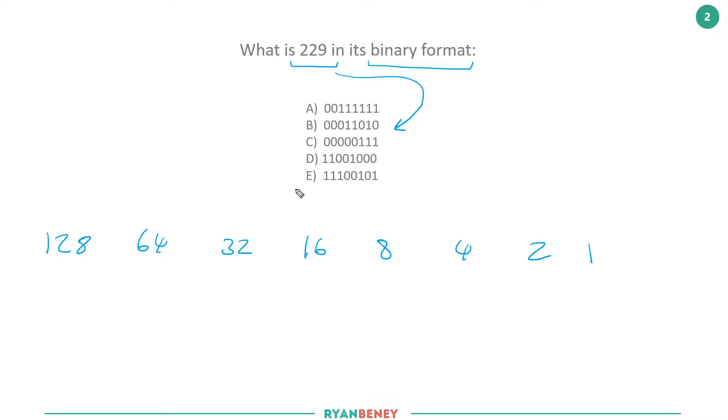The way this works is we need to ask ourselves some simple questions. Does 128 fit into 229? If it does, the answer is yes, we give it a one. If the answer is no, we give it a zero. In this case, we know that 128 fits into 229, so we put a one there. Then we take away 128 from 229, and we're left with 101.